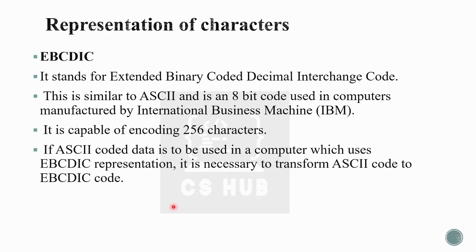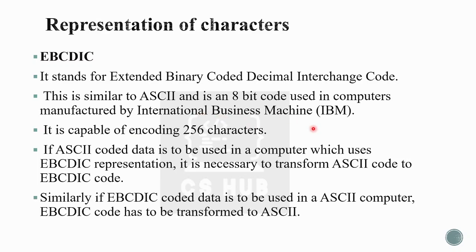If ASCII-coded data is to be used in a computer which uses EBCDIC representation, it is necessary to transform the ASCII code to EBCDIC code. ASCII is the widely accepted American standard, but IBM machines use EBCDIC. So ASCII-coded data must be converted to EBCDIC to run on IBM machines, and vice versa — EBCDIC data must be converted to ASCII for non-IBM machines.